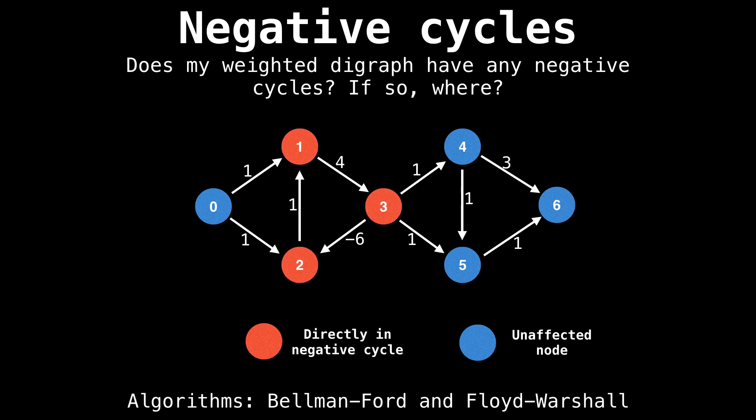In this graph, nodes one, two, and three form a negative cycle because if you cycle through all the nodes, you end up with a cost of negative one if you add up all the edge weights.